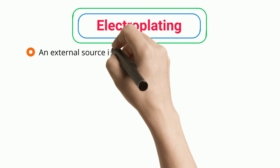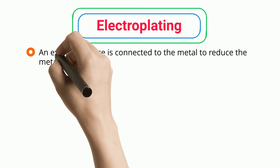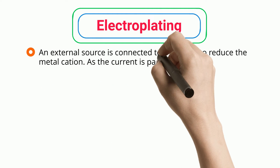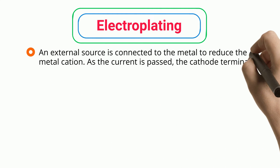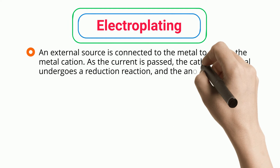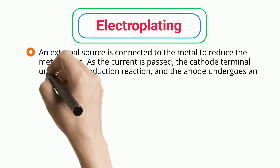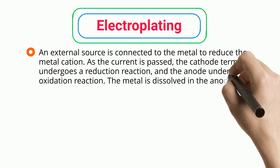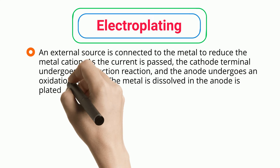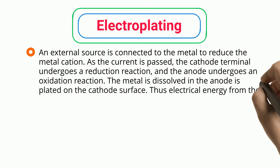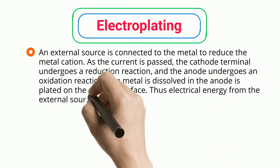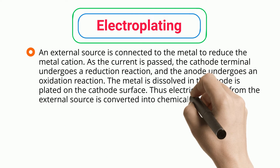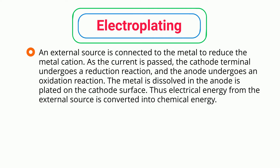An external source is connected to the metal to reduce the metal cation. As the current is passed, the cathode terminal undergoes a reduction reaction and the anode undergoes an oxidation reaction. The metal is dissolved from the anode and plated on the cathode surface, thus converting electrical energy from the external source into chemical energy.